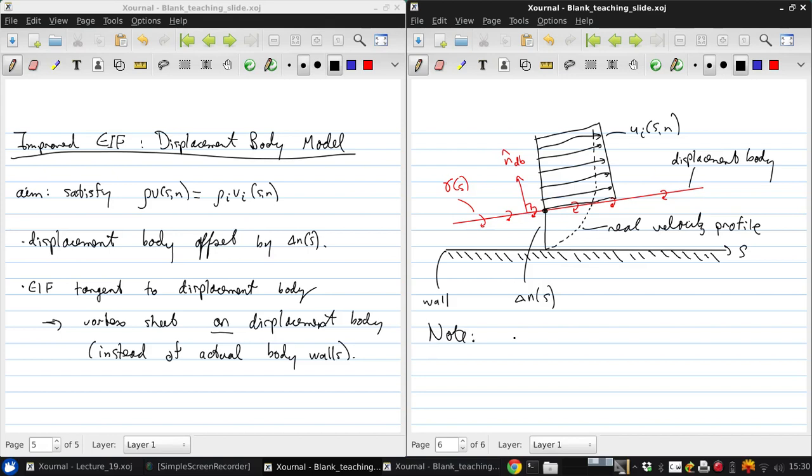Before we do that, let's note that ρ_i V_i is not zero at the displacement body, since the normal to the displacement body is not the normal direction. Instead it's tilted back by d/ds of δ_N.